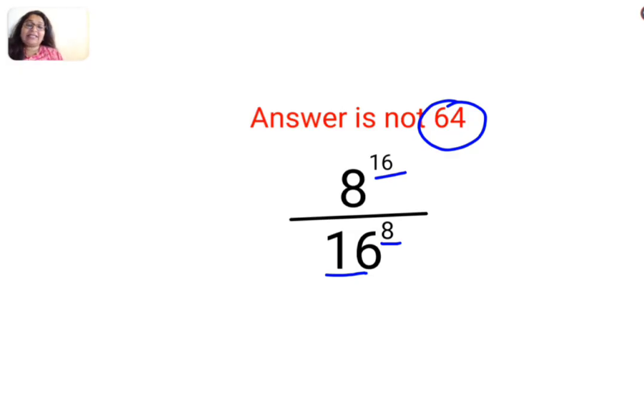Now kids please understand that when you have something like this, if I have A upon B raised to the same index raised to M, then I can very easily write this as A upon B the whole raised to M. But unfortunately the indices over here are not same.